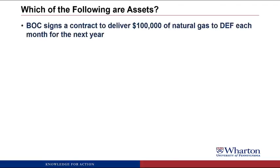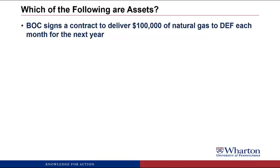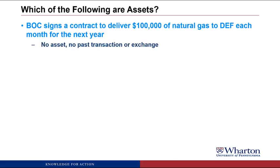BOC signs a contract to deliver $100,000 of natural gas to DBF each month for the next year. This one will not be an asset because there's been no past transaction or exchange. Every exchange of cash, goods, or services is going to happen sometime in the future. Nothing has been exchanged now, and so there can't be an asset for this.